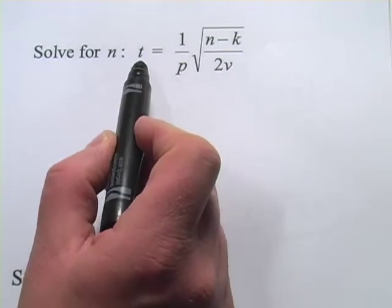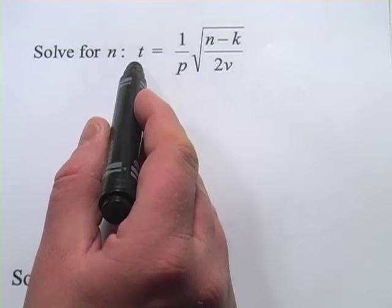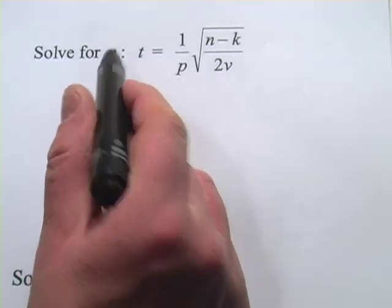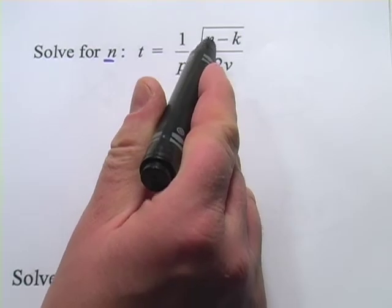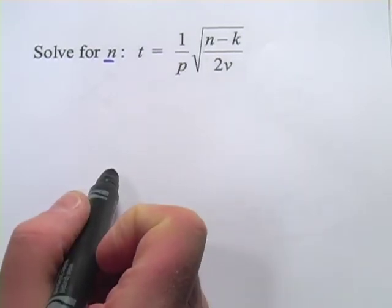That's how you solve for a particular variable. This one's solved for t. We want to solve for n, so we've got to get that n alone on one side of the equation.